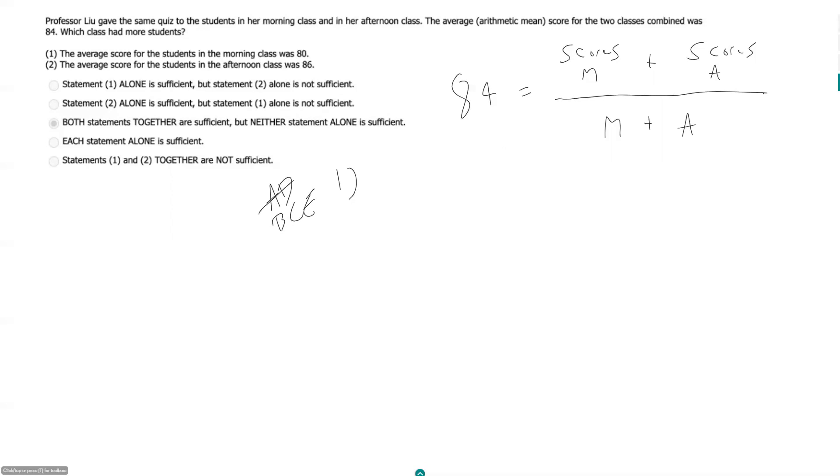But if we want to still somehow put this into our equation, well this is telling us how could we sum up the scores in our morning class? Well it should be the average for that class times the number of students in that class. So we can write 84 is equal to 80, the average score for the morning class, times M.